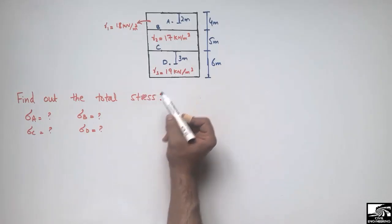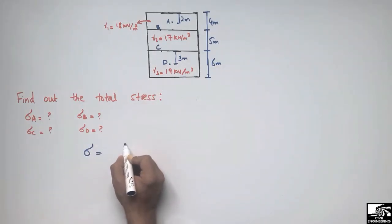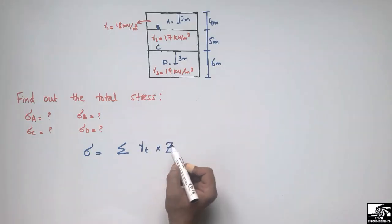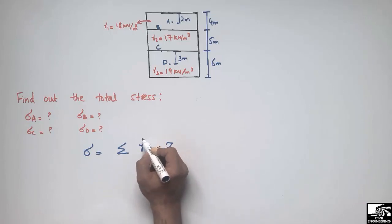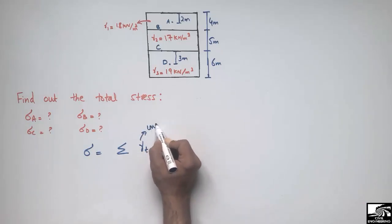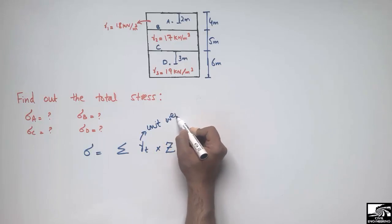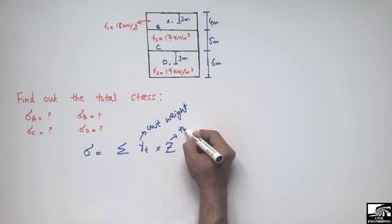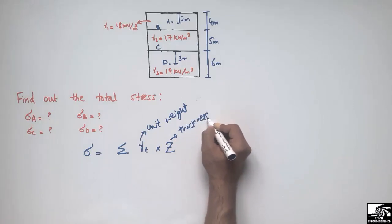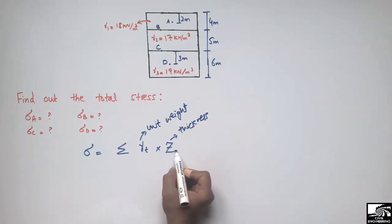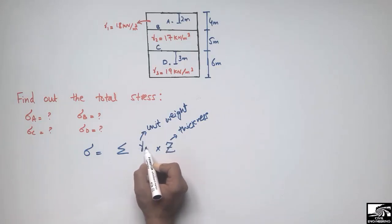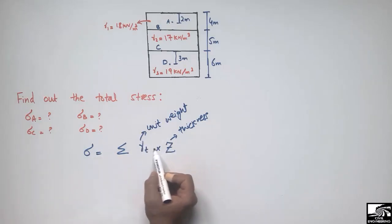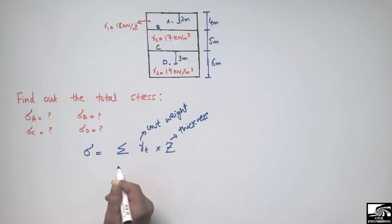To find the total stress, we use the formula: total stress equals the summation of gamma times z, where gamma is the unit weight of each layer and z is the thickness or depth of each layer. By multiplying the thickness of each layer with its unit weight and summing all values, we can find the total stress at any point.